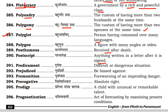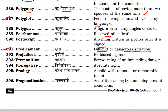Next is predicament. Predicament is a very bad, very dangerous, or difficult situation. Next is prejudiced — biased against something. This is very common — opinions and thoughts that are biased.